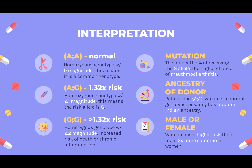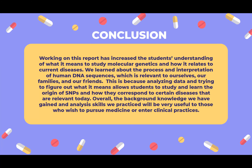Based on what we know so far, the patient has alleles AA, which is normal. So he or she may have Gujarati Indian ancestry, and the patient may be female because women have a three times greater chance of developing this disease than men. In conclusion, we have learned so much about rheumatoid arthritis, how an individual is affected by it, what a SNP actually is, and how it is found on websites like SNPedia and OMIM. With these skills learned, we hope that other students will be able to use their analytical skills and apply their knowledge when pursuing medicine or when entering clinical practice.